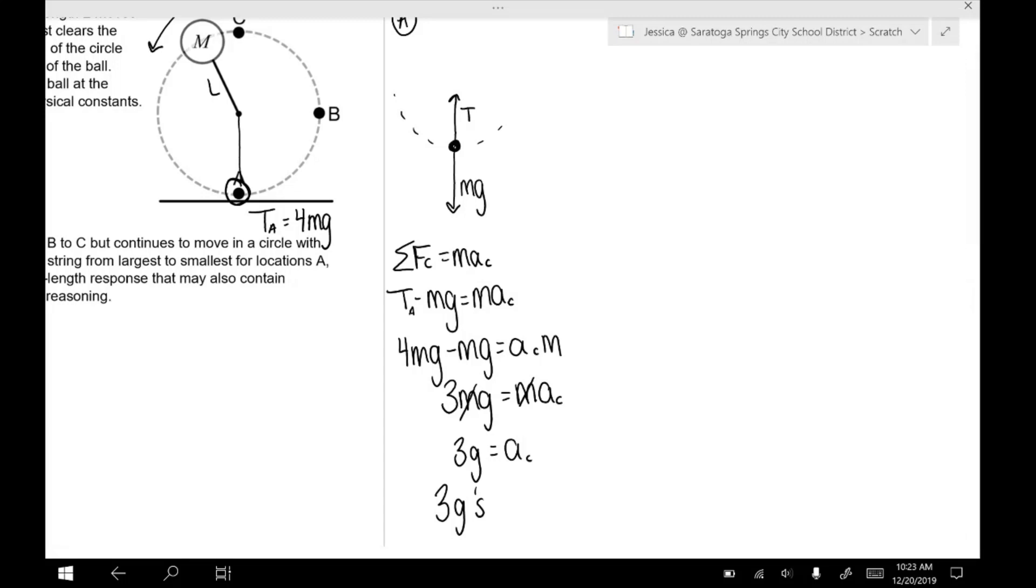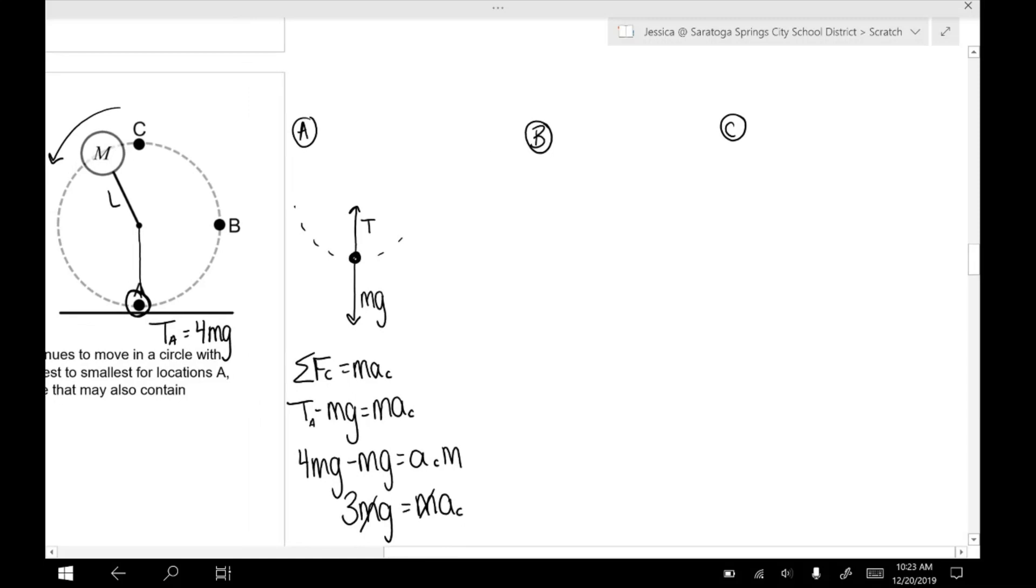All right. So at B, we're kind of at the side of the circle. Tension points into the circle and mg points down. Okay. So tension is the only force that's going to cause a centripetal force at this location. Now, the tension at B is not going to be the same as the tension at A. Okay. Because this ball is not moving at a constant speed around the circle.